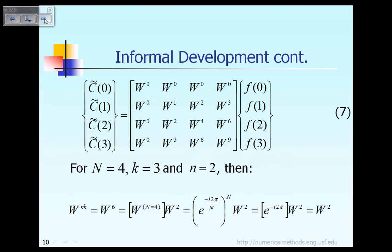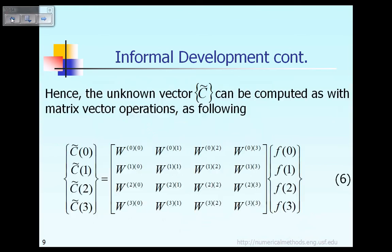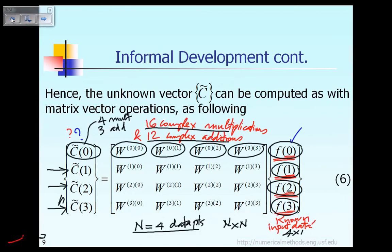Based on the previous slide, you can see you have something like 0 times 0, 0 times 1, 0 times 2, 0 times 3 for the first row of the matrix.